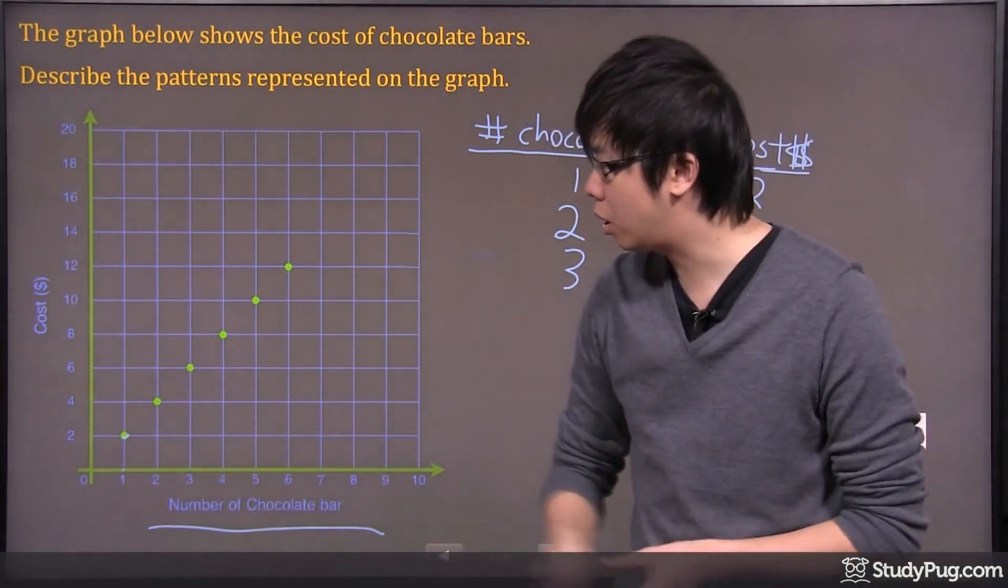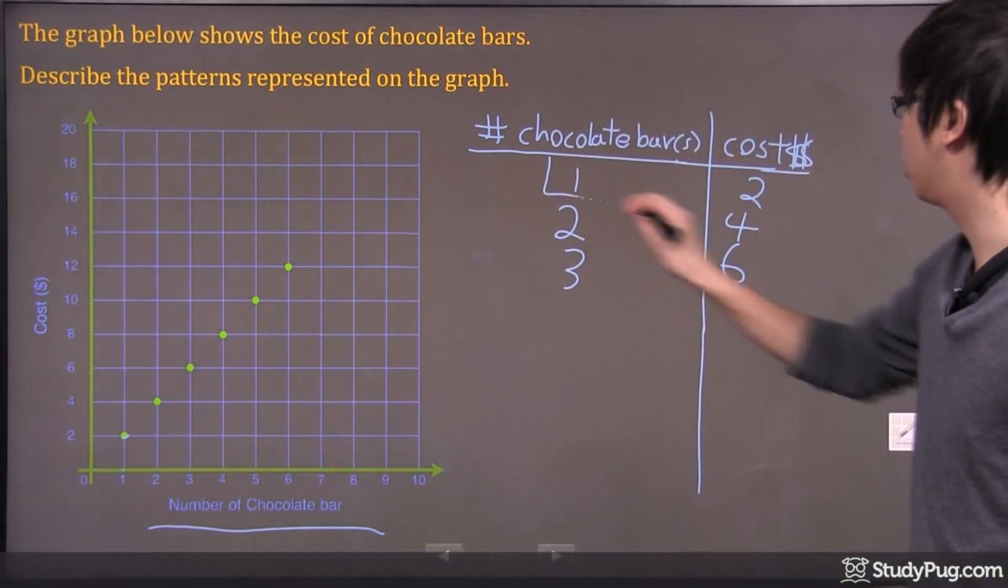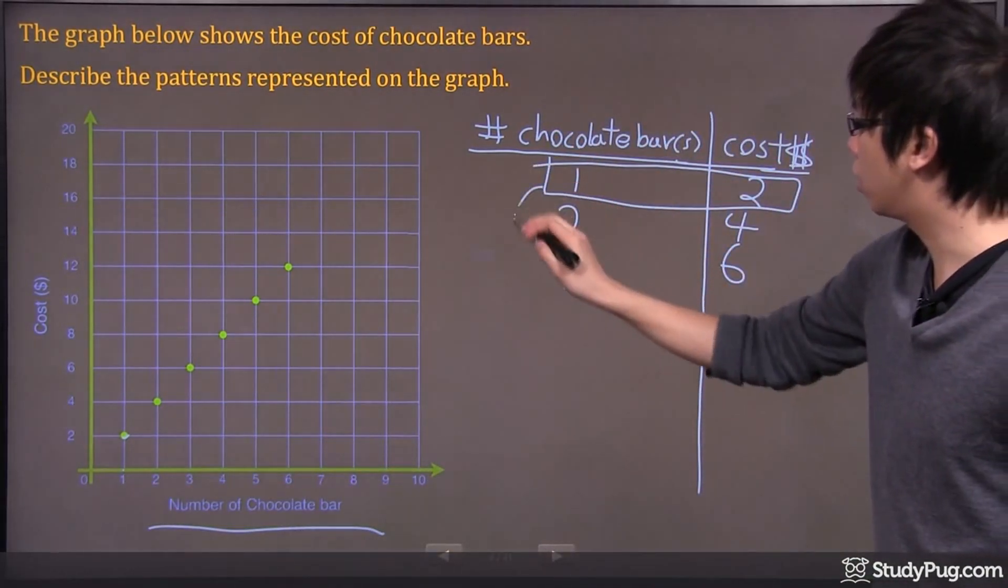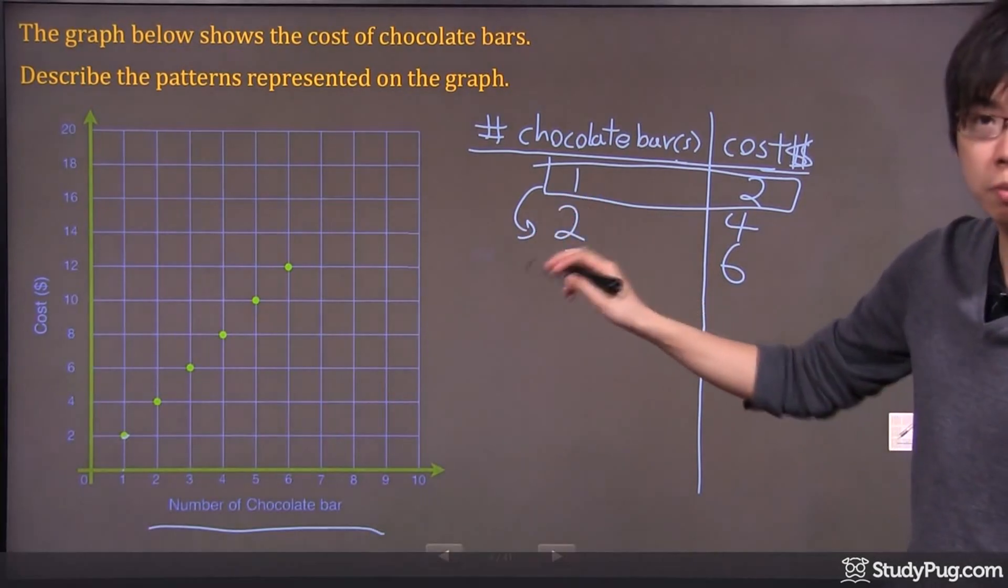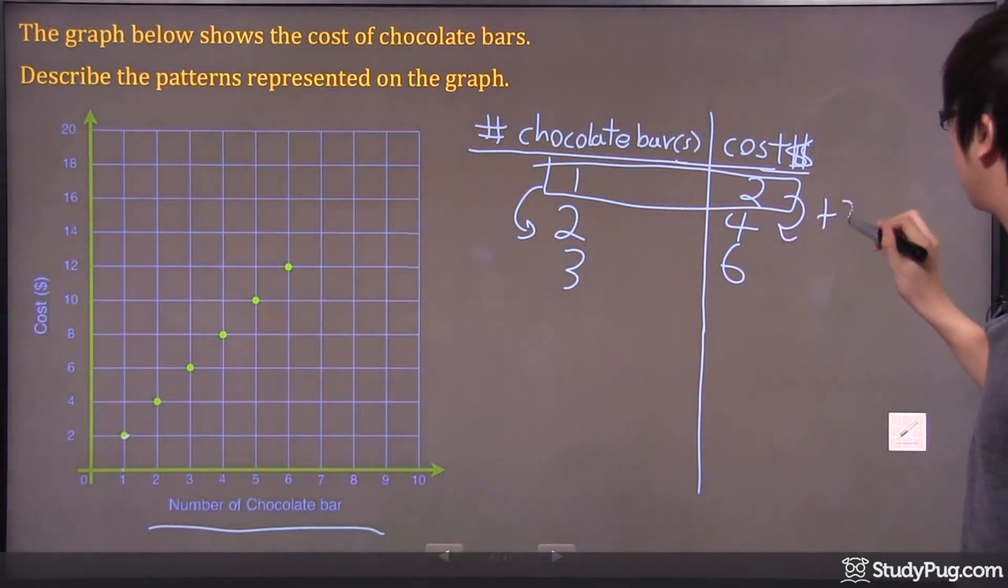And you probably got that already just by looking at the first one. Every chocolate bar is $2. So, every time you increase your chocolate bar by 1, of course, over here, you increase by 2.